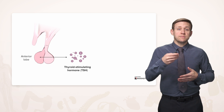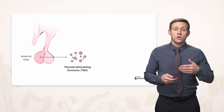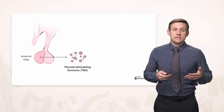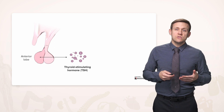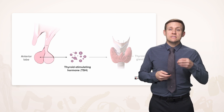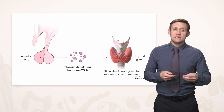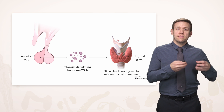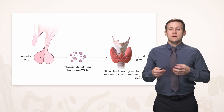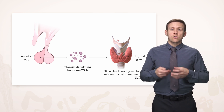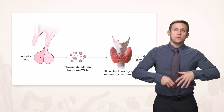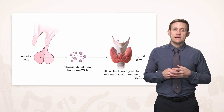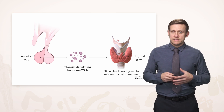Thyroid stimulating hormone, or TSH, tells you what it's doing. It's going to act to stimulate the thyroid gland to in turn produce thyroid hormones. Thyroid hormones are then going to go on to have a wide array of effects on metabolism.